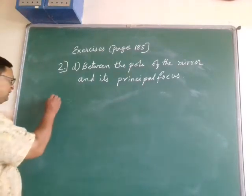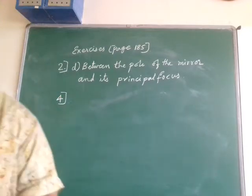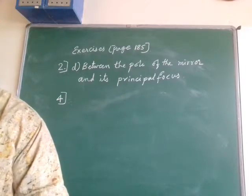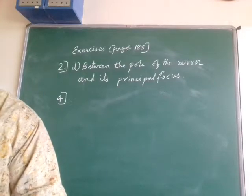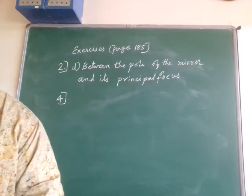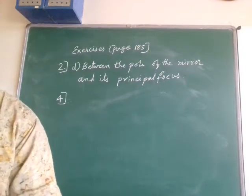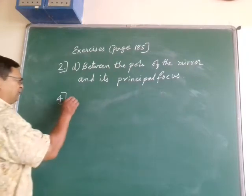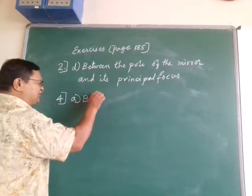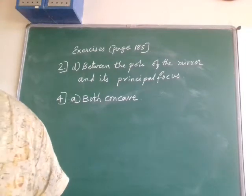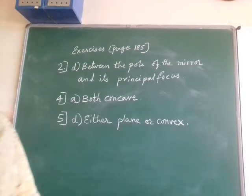Question 4: a spherical mirror and a thin spherical lens each have a focal length of minus 15 centimeters. The mirror and the lens are likely to be — the answer is both concave, because the focal length is minus 15 centimeters.